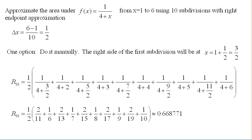And then one option is to actually do this manually, to say okay, the first subdivision will be at 1 plus delta x because we're doing a right endpoint approximation. So my first x value is 3/2. My next one is 2, then 2½, then 3, 3½, 4.